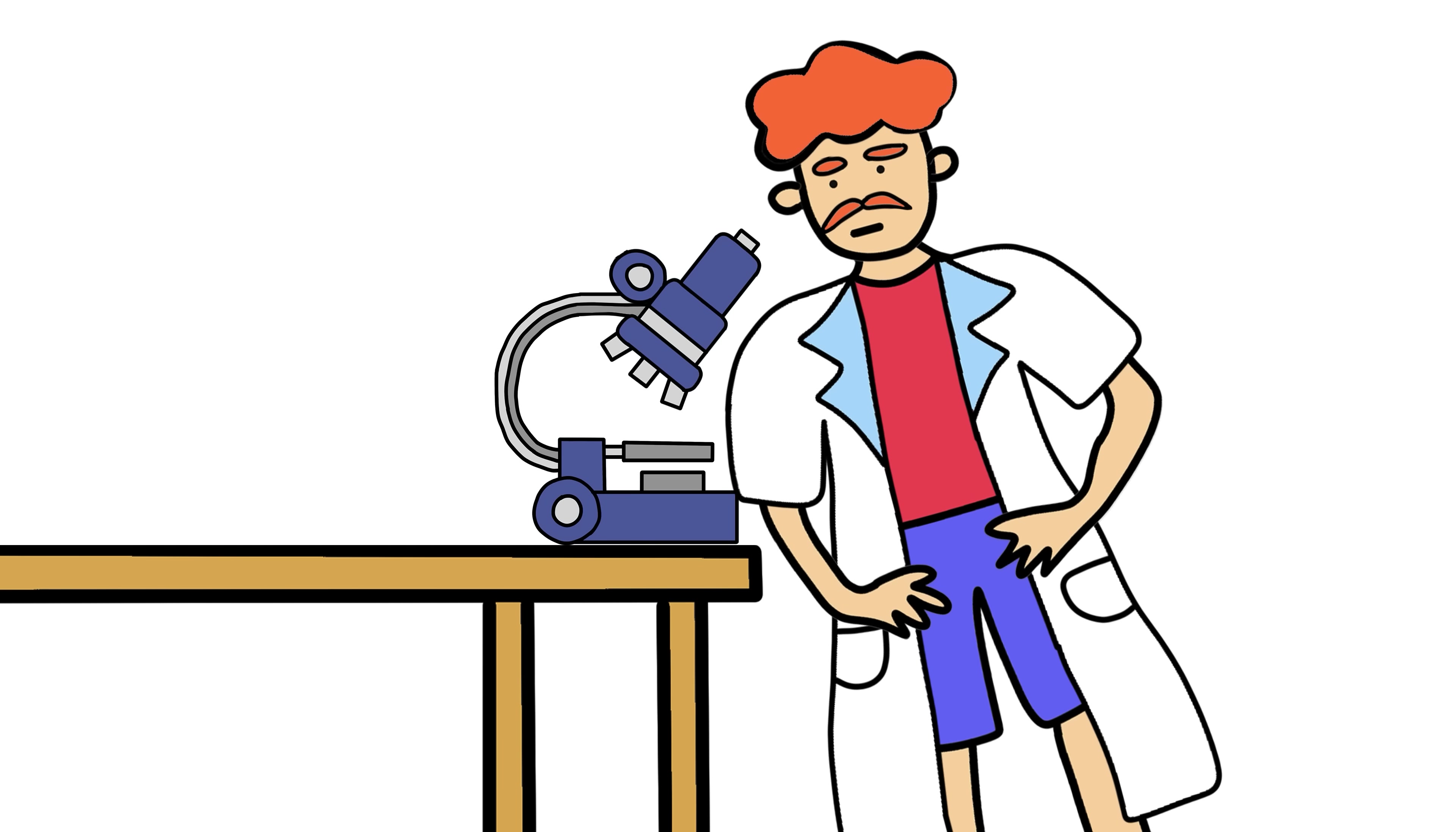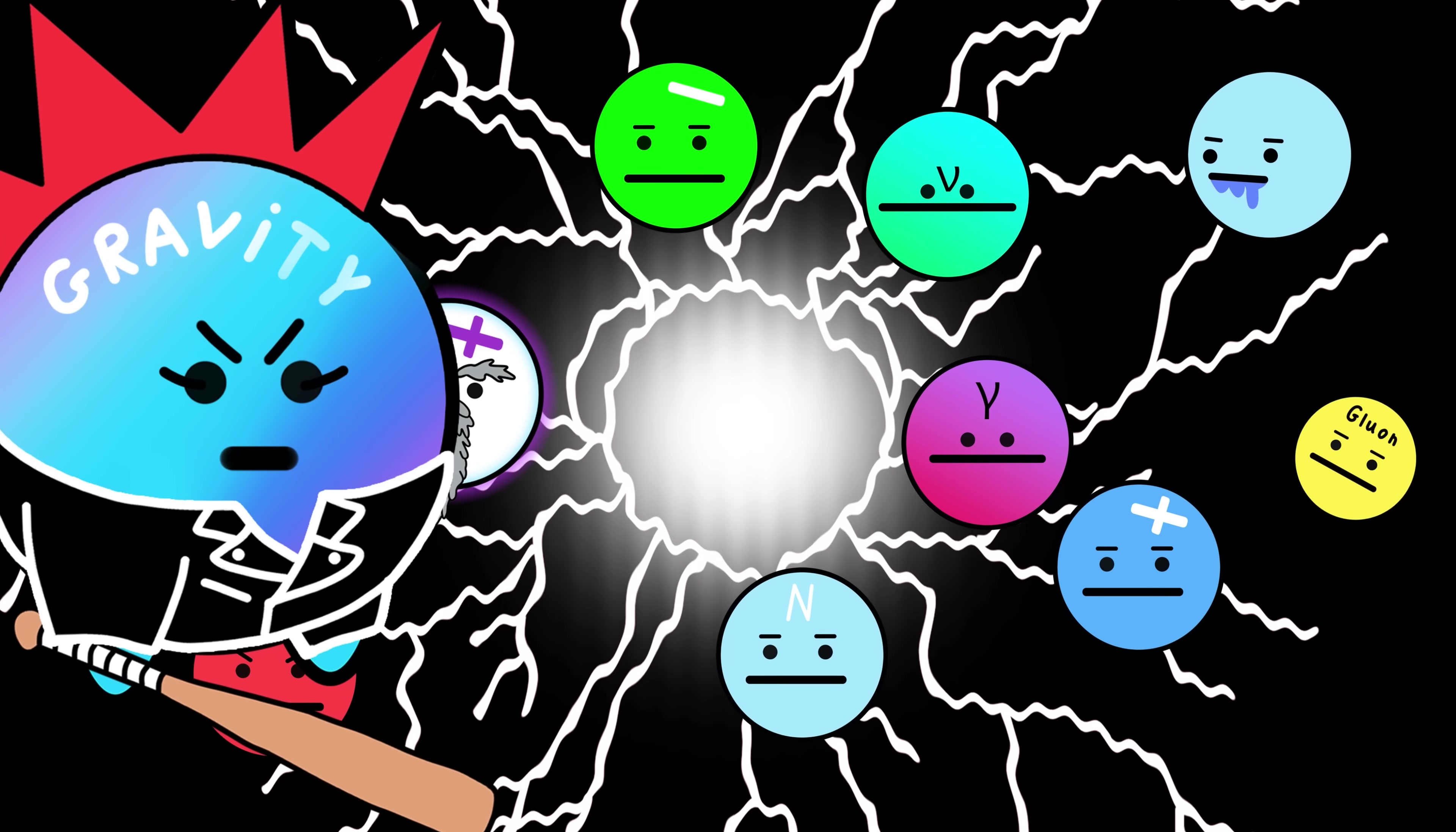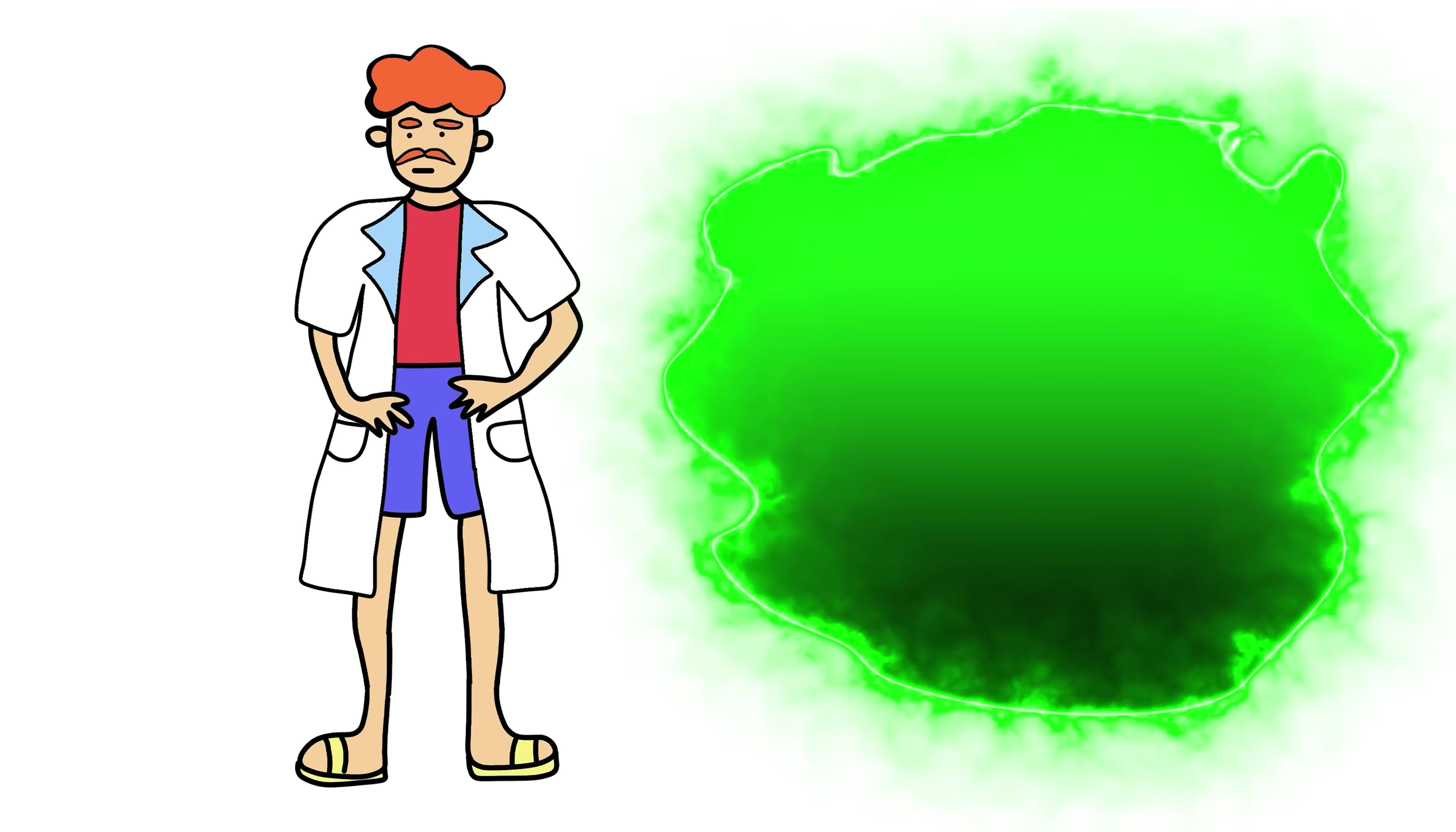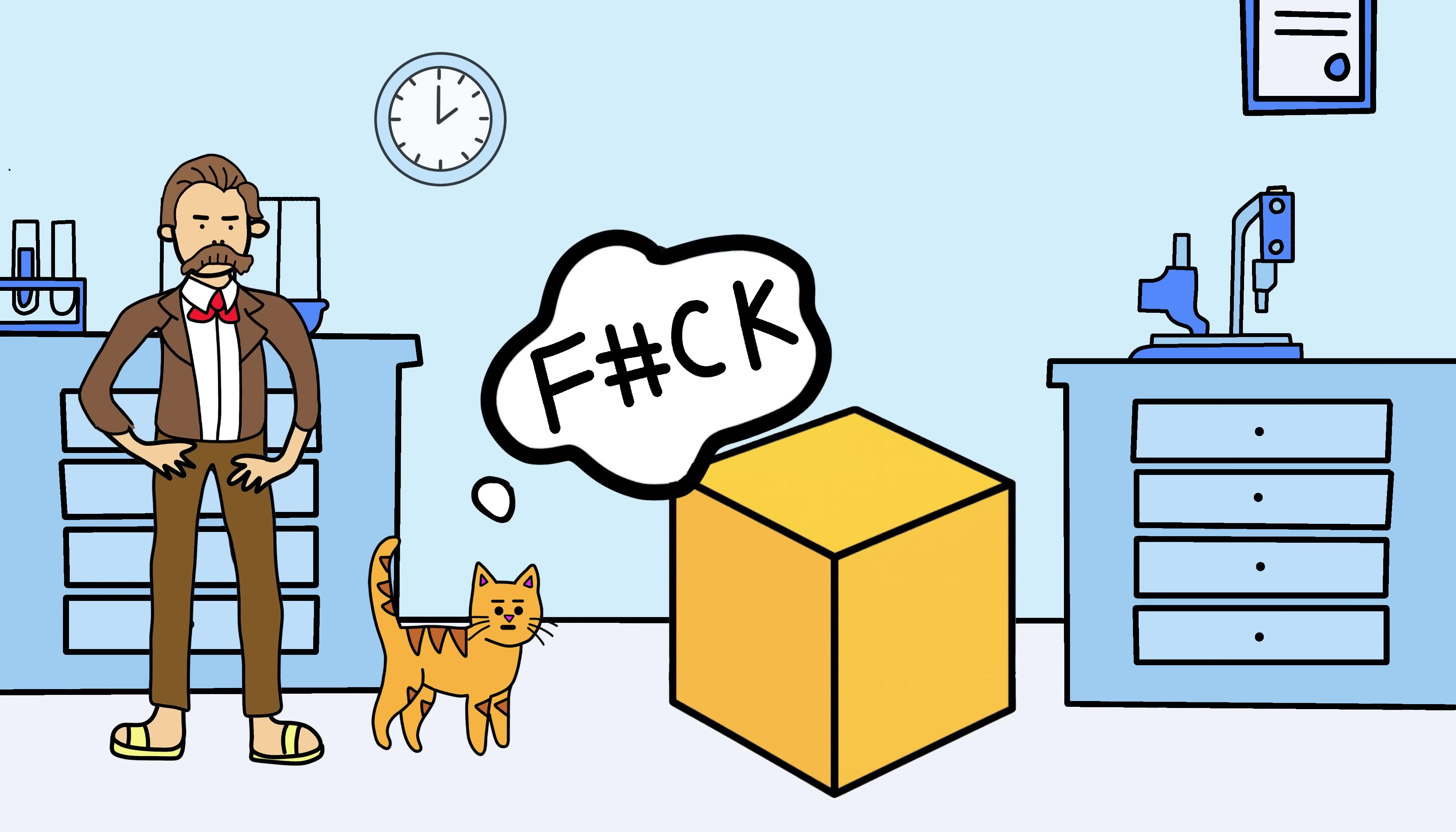Because when scientists look at atoms, the rules break again. Surprise! At that scale, nothing behaves normally. Particles don't exist in one place or another, they exist everywhere at once, until you look at them. That's the quantum measurement problem. Reality doesn't pick a state of existence until it's observed. Think about that. The act of looking decides what's real. It's like Schrodinger's cat thought experiment. You put him in a box and he's both alive and dead, or both, until you open the box.